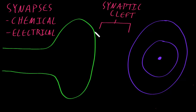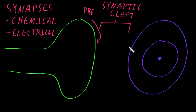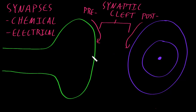The membrane of the neuron that's facing the synaptic cleft is called the pre-synaptic membrane, which is on the neuron side. The membrane of the target cell that's facing the synaptic cleft is called the post-synaptic membrane, on the target cell.